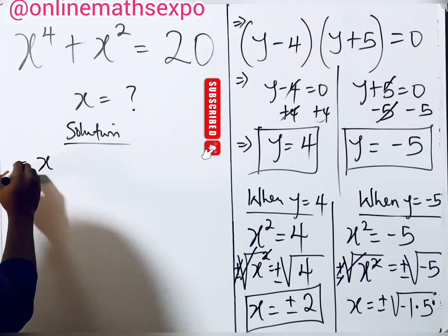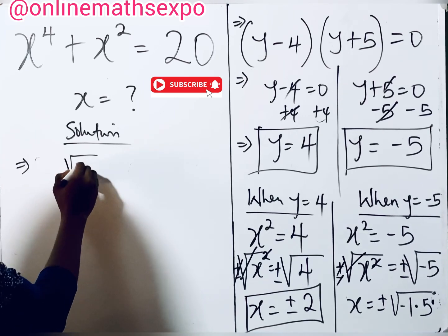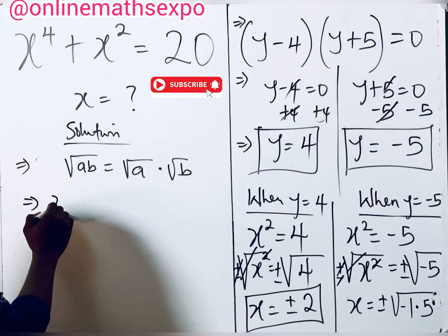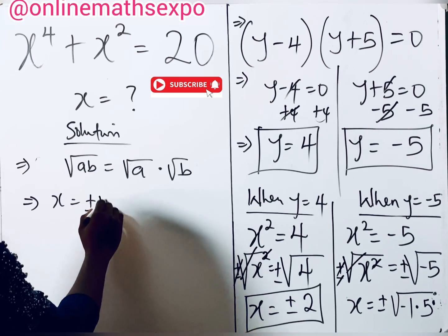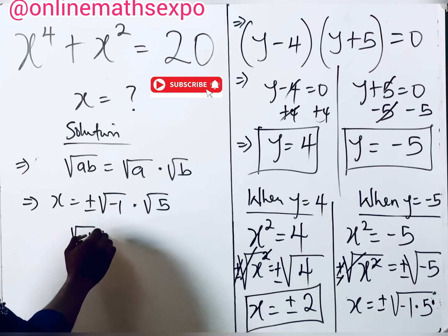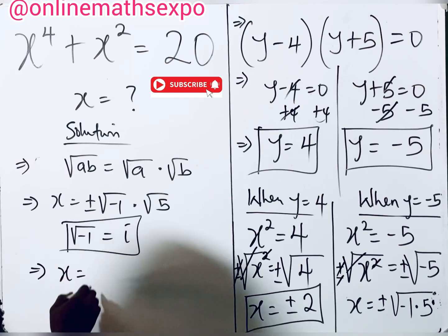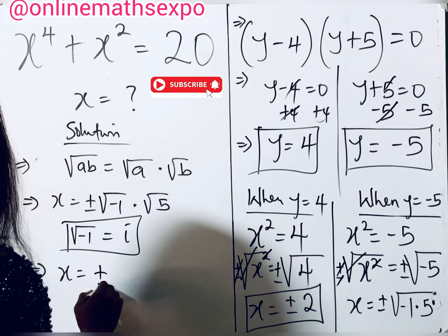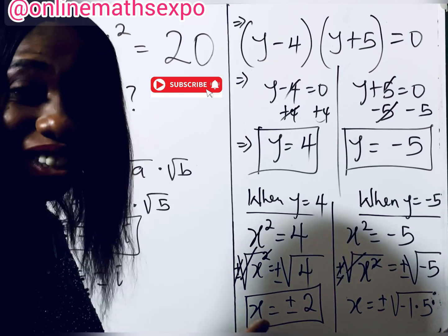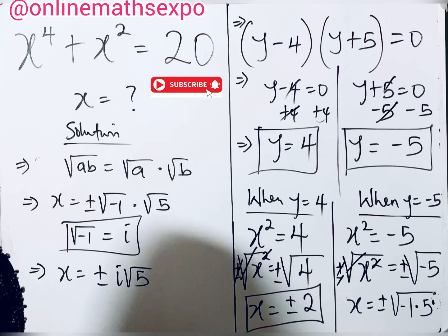Using the rule √(ab) = √a × √b, we split this into ±√(−1) × √5. Since √(−1) = i (the imaginary unit), we get x = ±i√5. Since 5 is prime, √5 cannot be simplified further, so this is the lowest form.